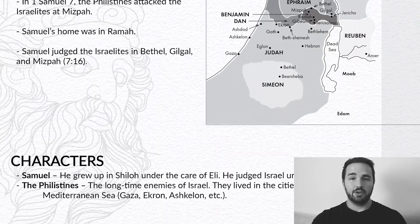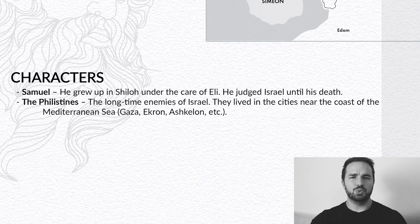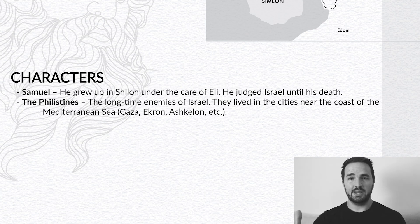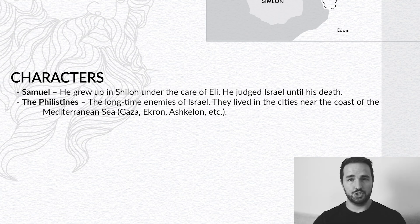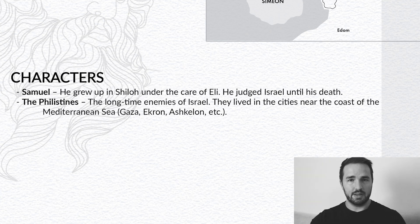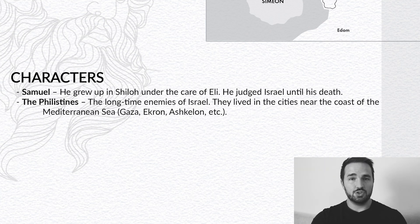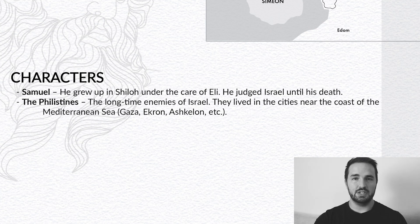In regards to our characters, we have the Israelites, but I don't have them listed here because we talk about them every chapter. We have Samuel — he was a judge in Israel until the Israelites appointed a king, and even into that period a little bit. The Philistines are our next character; they were the longtime enemies of the Israelites.